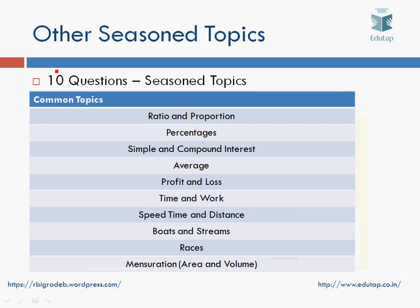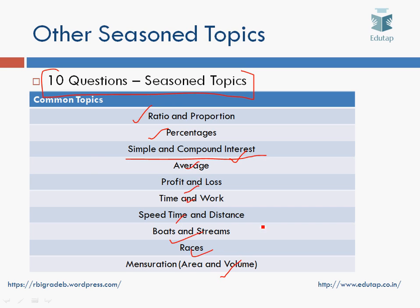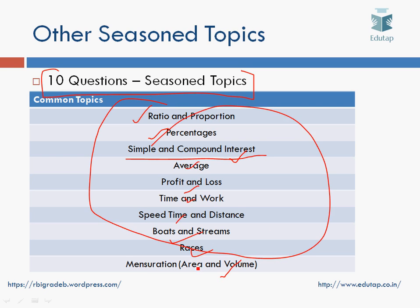There were 10 questions in total covering multiple topics, one question each: one on ratio, one on percentages, one on simple interest and compound interest, one on averages, profit and loss, time and work, speed and distance, boats and streams, races, and mensuration. All these topics are important, and there was one question on each of these topics last year.